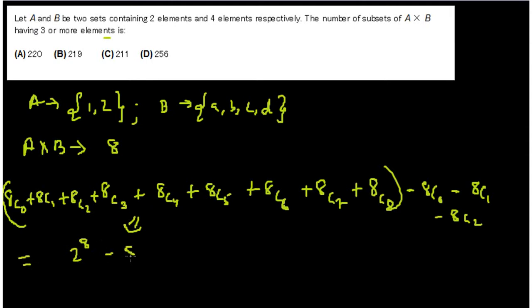So my final result is two to the power eight minus 8C0 minus 8C1 minus 8C2, which is 256 minus one minus eight minus 28.